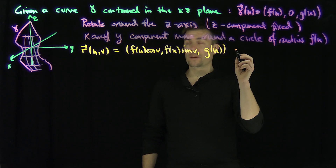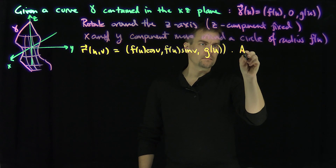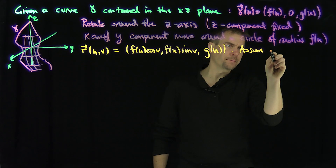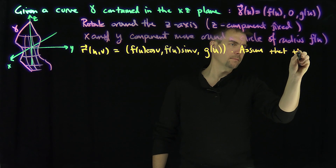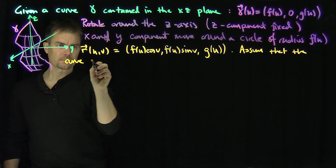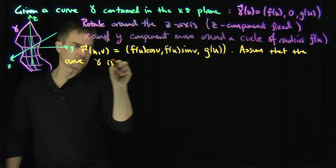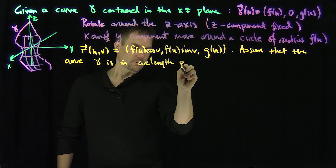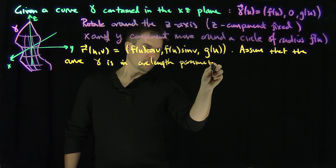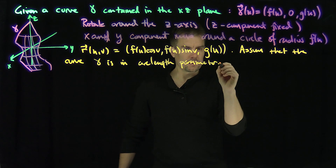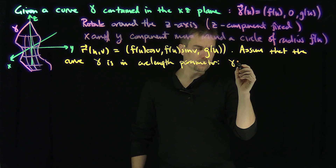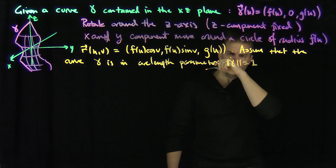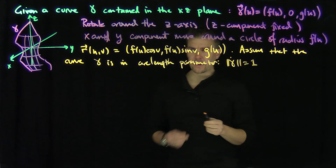Furthermore, let's put this curve into arc length parametrization, which means the norm of gamma prime equals one.